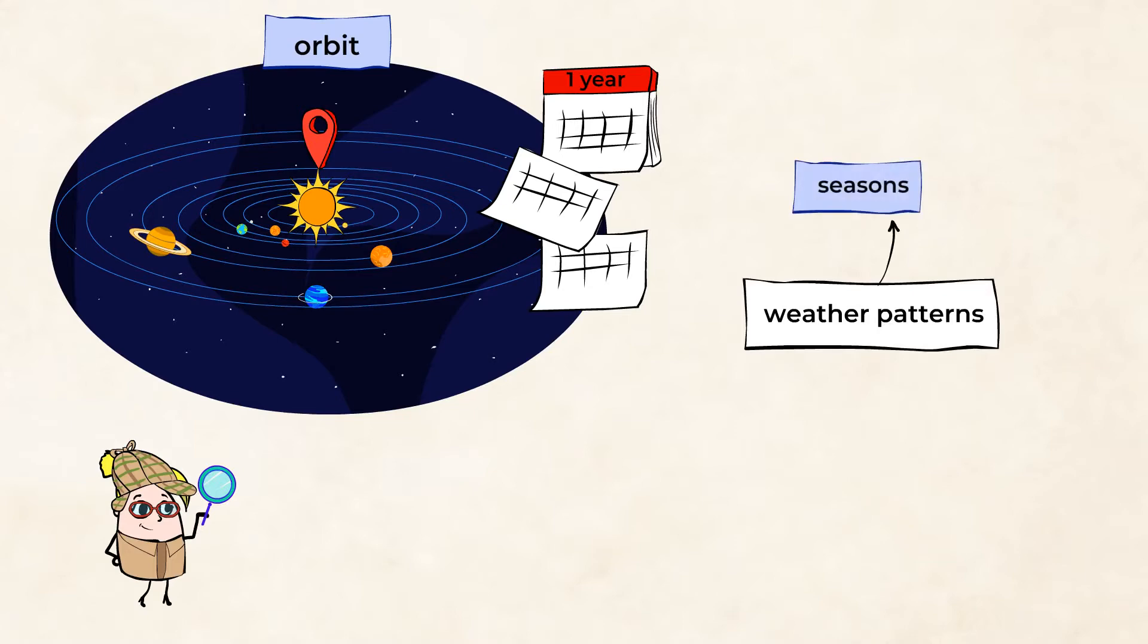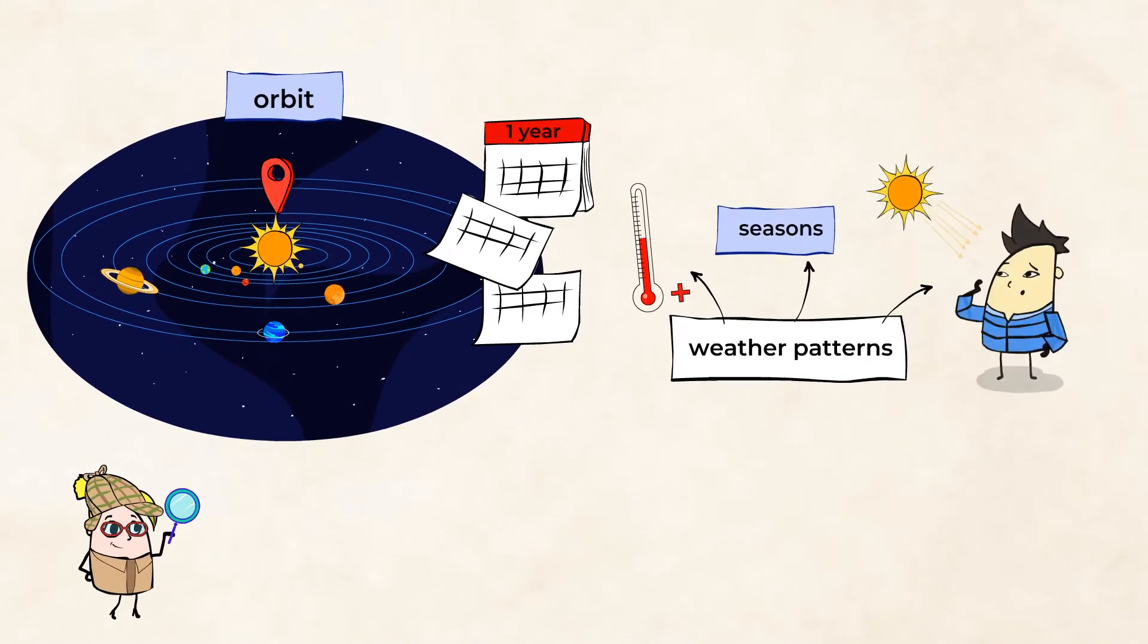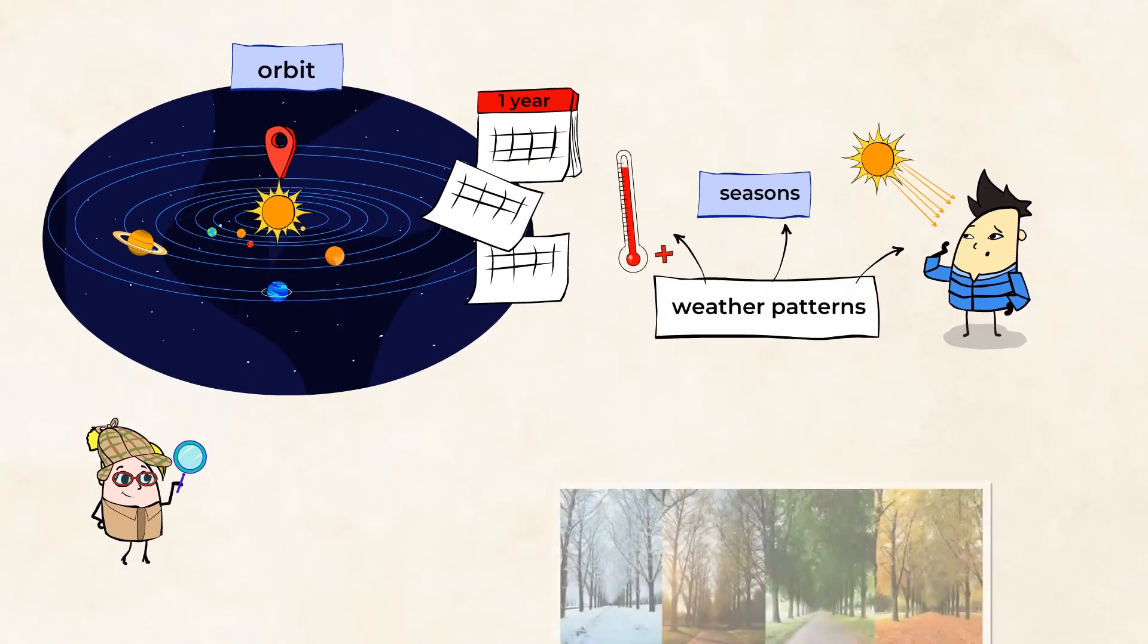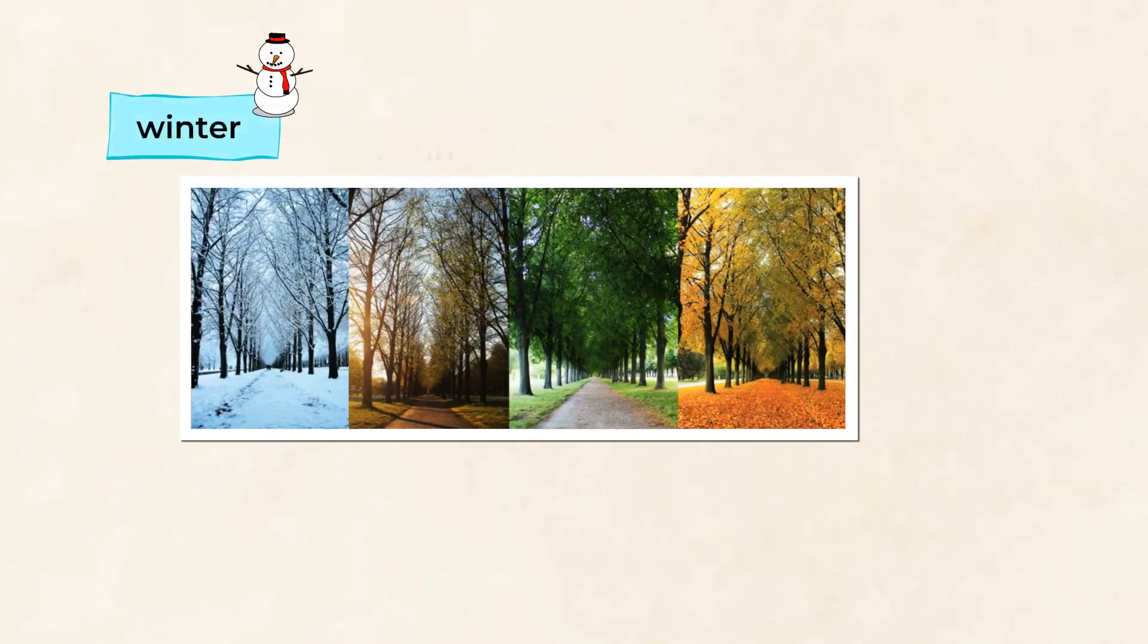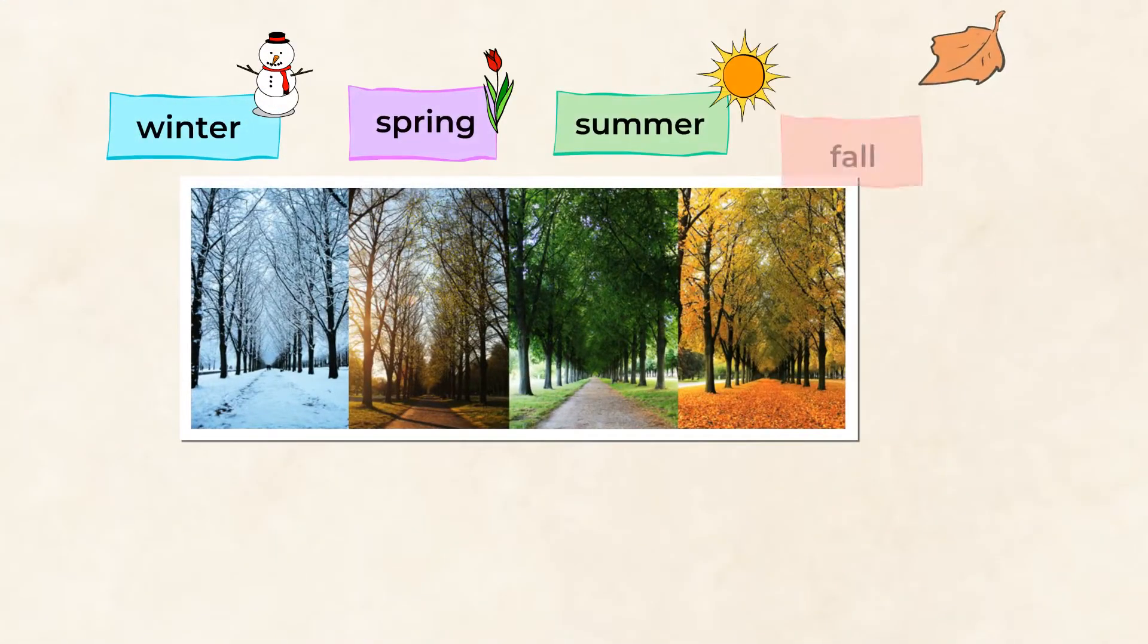Our seasons, temperatures, and amount of sunlight we get each day all are related to the Earth's orbit around the sun. In one year, we experience all of our seasons: winter, spring, summer, and fall.